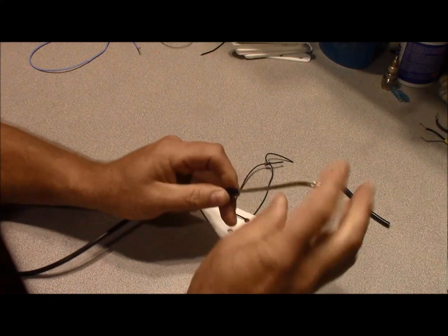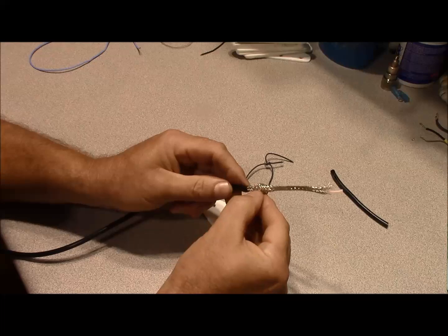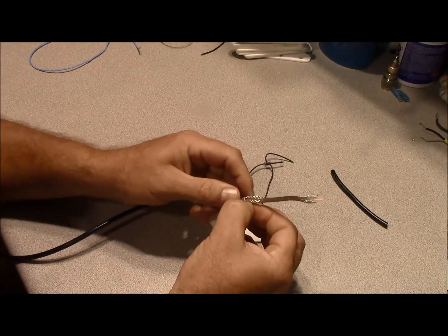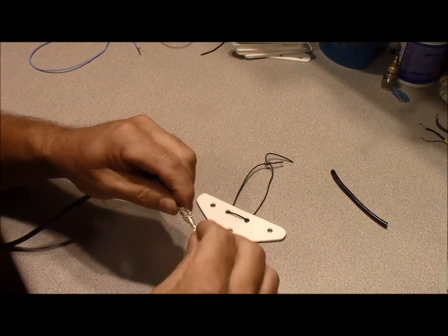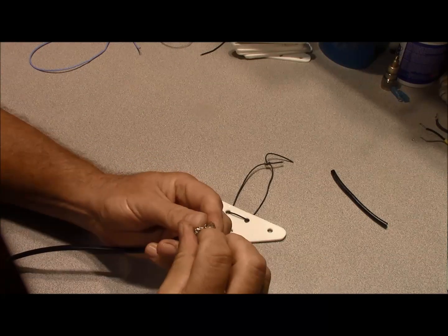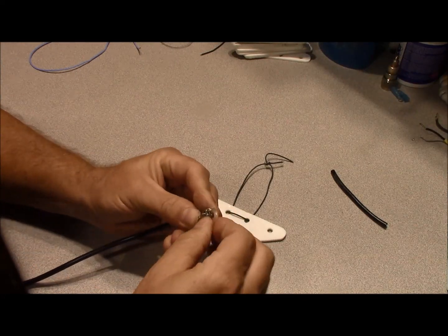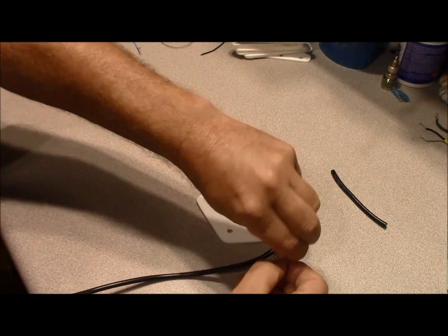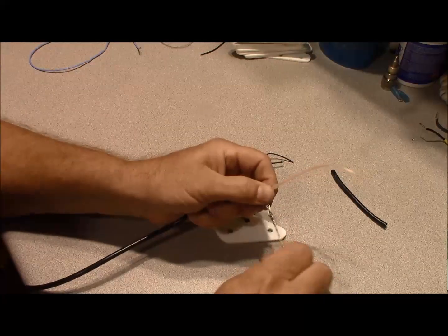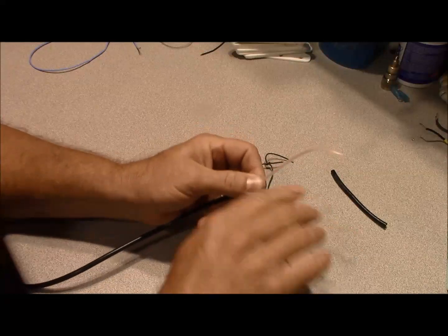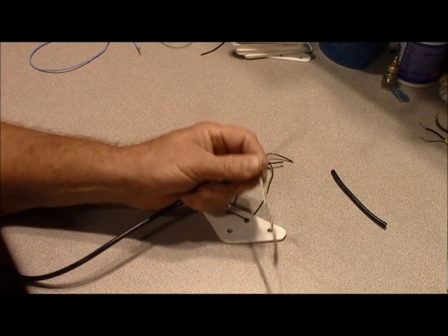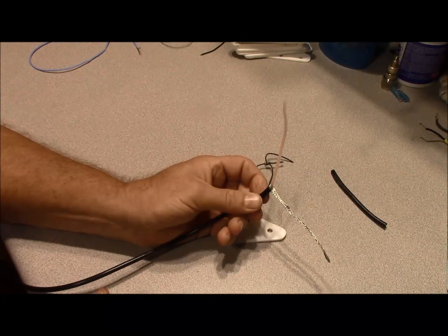Once we get that off, we need to go ahead and push our braid back. We need to open our braid up enough to get our center conductor broke out. I've done numerous videos on this in the past, making coax antennas, etc. Go ahead and pull your braid out straight and your center conductor.